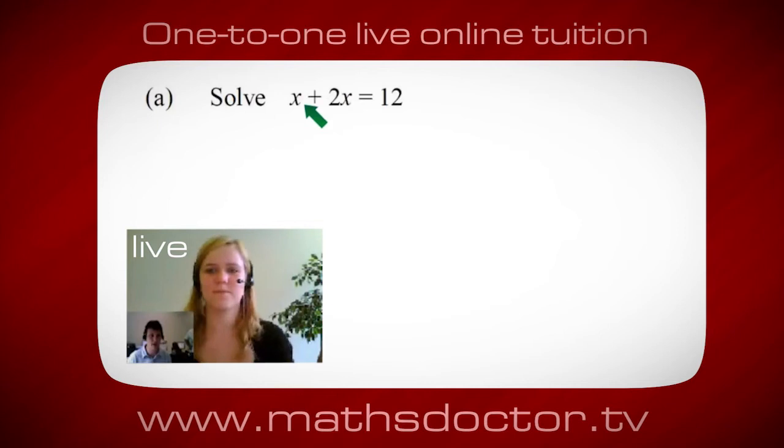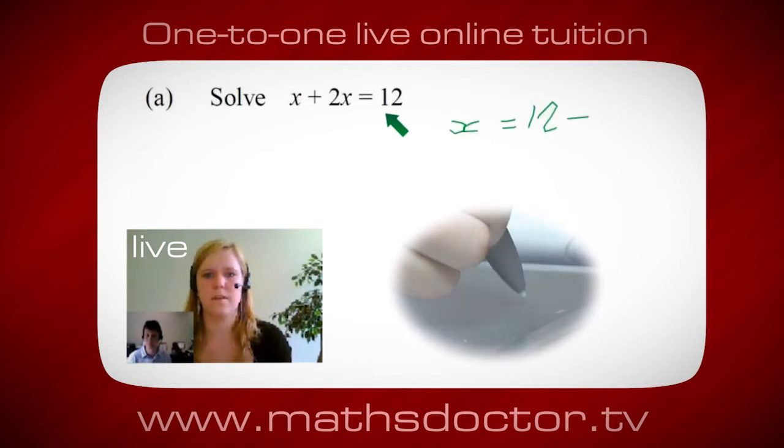Marie, so let's have a look at this one. So solve x plus 2x equals 12. So what do you think you do first? Okay, well, I want x on its own. So I would put x equals 12 minus 2x.